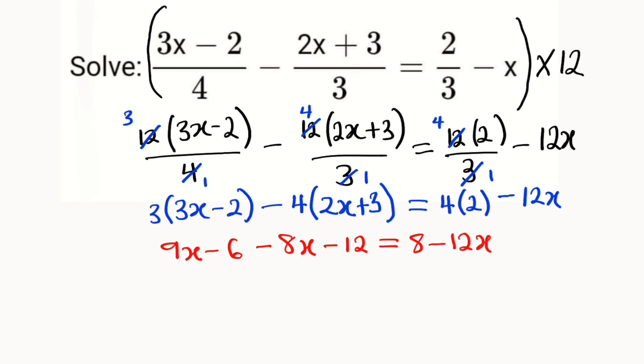Equals 4 multiplied by 2, which is 8, minus 12x. We have 9x here, we have negative 8x. If negative 12x crosses over, it becomes positive 12x. And to the right, we still have it there. Taking negative 6 over, it becomes positive. Taking negative 12, it becomes positive as well.